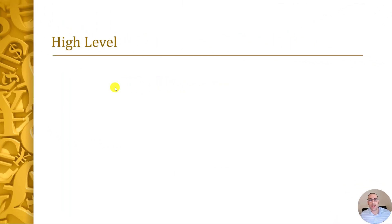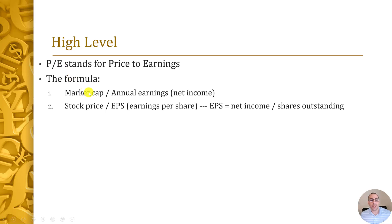So let's get a high level understanding on what PE is. Simply put, PE stands for price to earnings. The formula is market cap over annual earnings, and you want to take the annual earnings. Most PE ratios use the prior four quarters, but you could take the most recent quarter and multiply by four. Another way to calculate the PE is look at a company's stock price divided by the EPS, earnings per share. Earnings per share is net income over shares outstanding. Remember, net income is a company's profit or loss — it's at the bottom of the income statement.